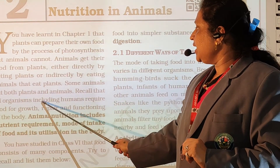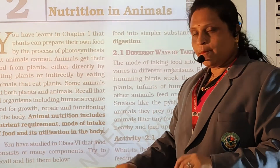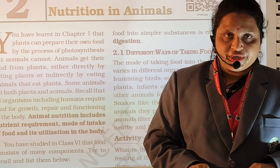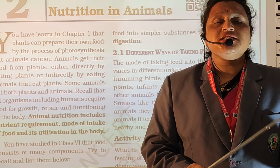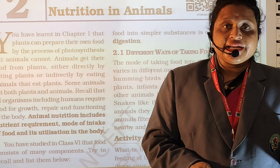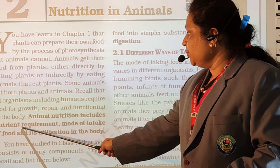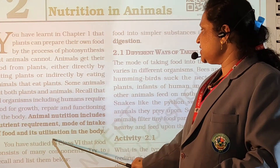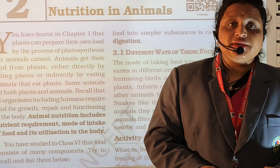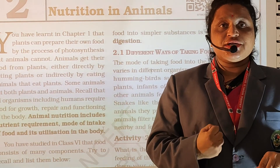Recall that all organisms, including humans, require food for growth, repair, and functioning of the body. From food we get various types of nutrition like fats, proteins, and carbohydrates. Human beings need food for daily activities, for proper growth, and for brain function. Animal nutrition includes nutrient requirement, mode of eating food, and its digestion in the body. Some animals eat plants and convert that energy into fats.